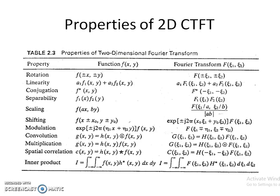What are the properties of the continuous-time Fourier transform? You are already familiar with the properties of the one-dimensional transform, so the proofs extend directly to the two-dimensional case. Take the proofs of all these properties as an assignment and submit by next weekend. The reversal property states that f(±x, ±y) has a Fourier transform of F(±ζ₁, ±ζ₂).